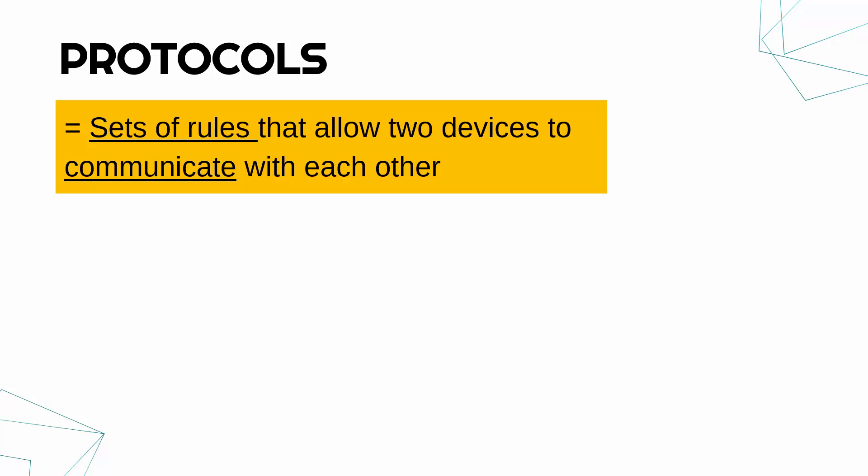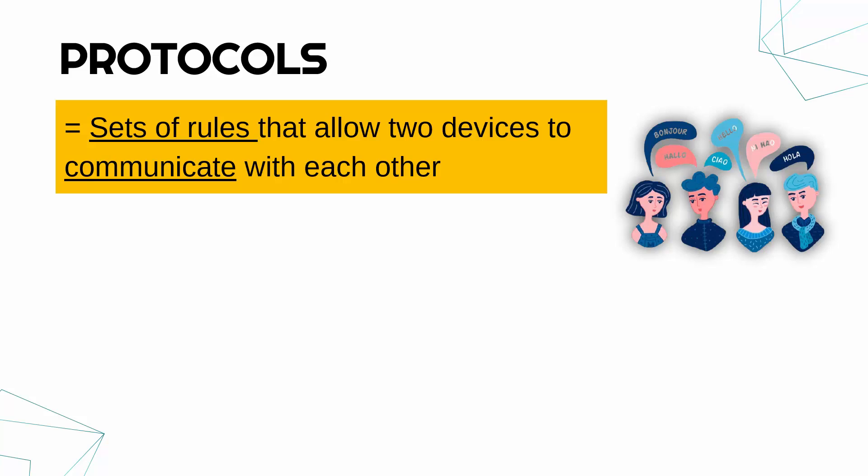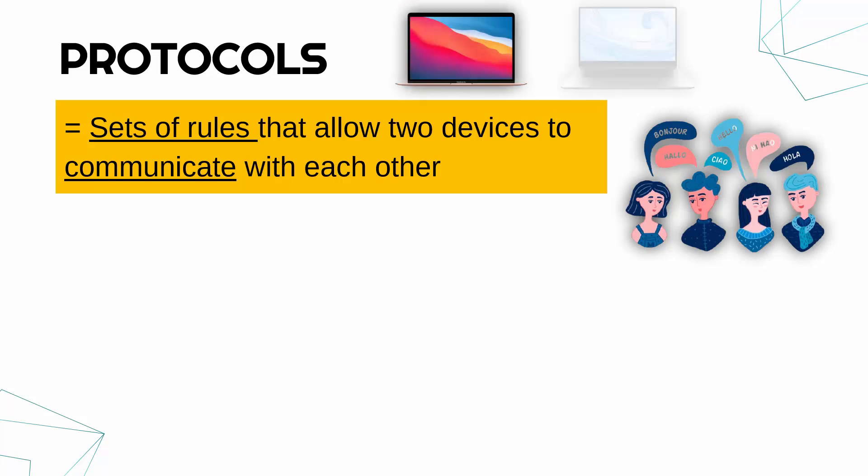Both parts of that definition are really important — rules which enable communication. As an analogy, when people speak different languages they can't always communicate in the same language, so they might use a third language as a common one. For example, somebody from Italy and somebody from Spain might speak to each other in English. Similarly, protocols are an agreed standard to enable devices to communicate. For example, the device on the left is made by Apple and the device on the right is made by Huawei — different companies, different countries, different technology — and they would not be able to communicate unless there were sets of rules both agreed to. That is the whole point of protocols.